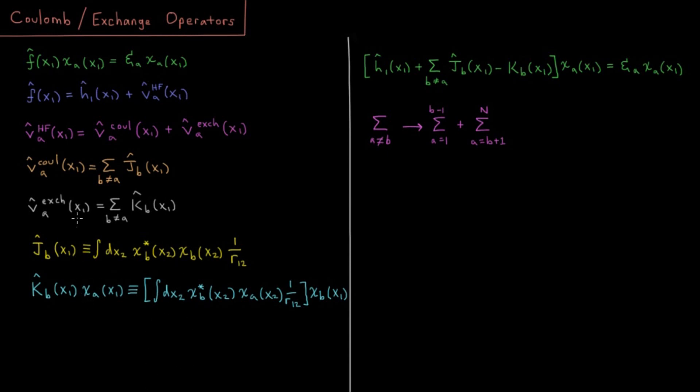So let's get down to what these two operators are. For our Coulomb potential operator, we have the Coulomb potential of spin orbital B acting on electron one will be the integral over all of the coordinates of electron two, which is occupying spin orbital B, of its charge density.